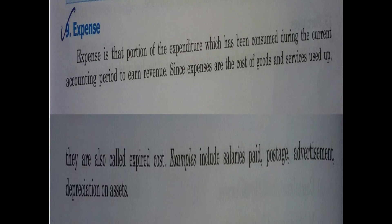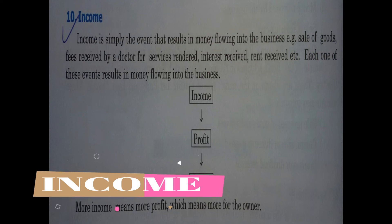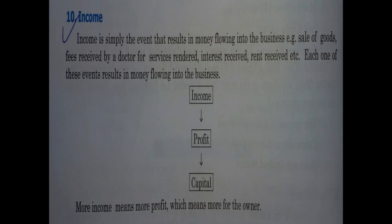Examples of expense include salaries paid, postage, advertisement, and depreciation on assets. Income is simply the money earned by a business — when it sells the goods or services it deals in, the revenue received is its income. For example, a pen seller's revenue from sales is income; a doctor's fee for services rendered is income. More income means more profit, which means more benefit to the owner.